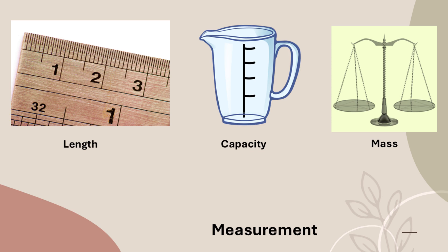In the measurement of length — in early days, people used body parts to measure length since there was no standard unit. People used their hand span, foot span, stride, and cubit to measure length.